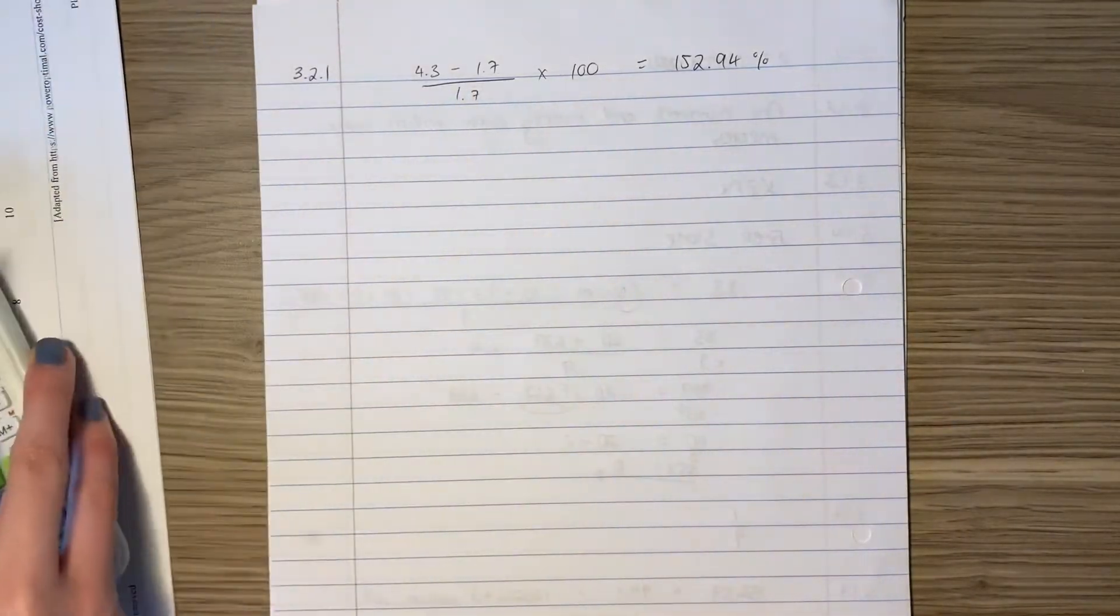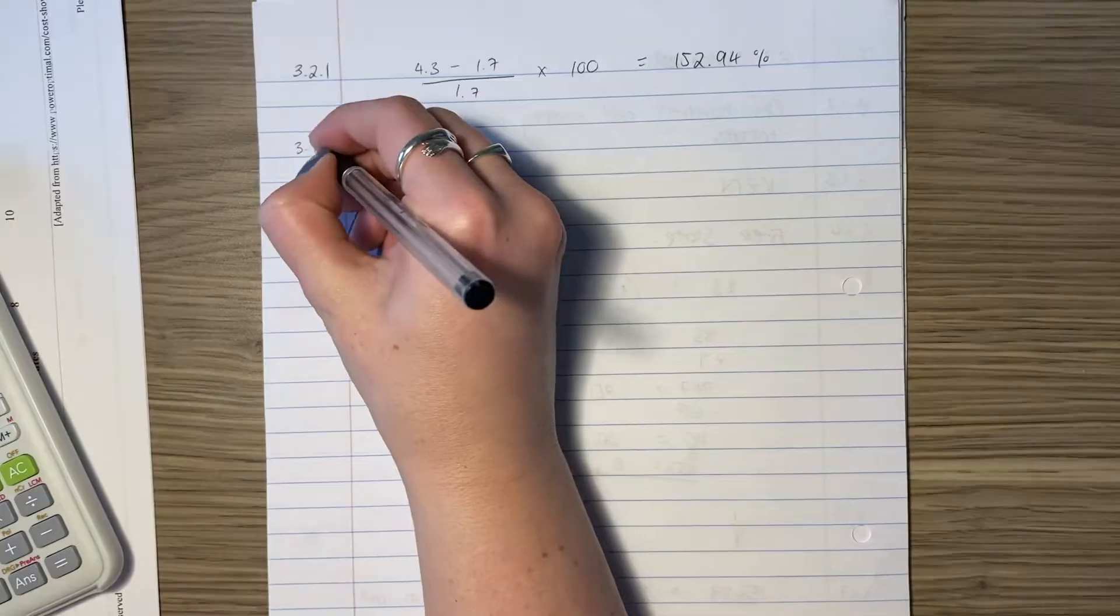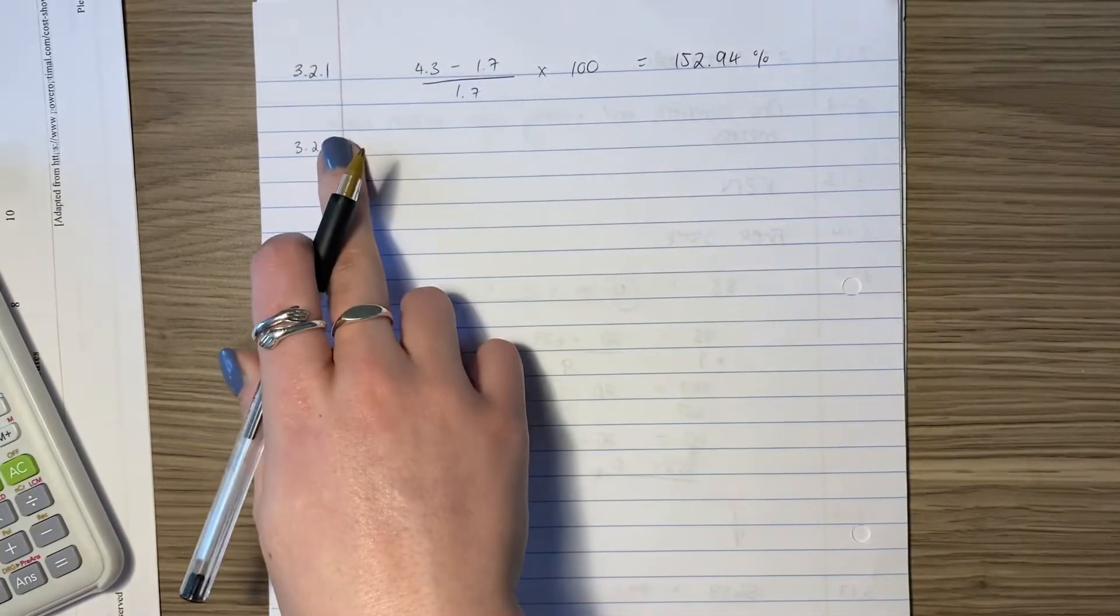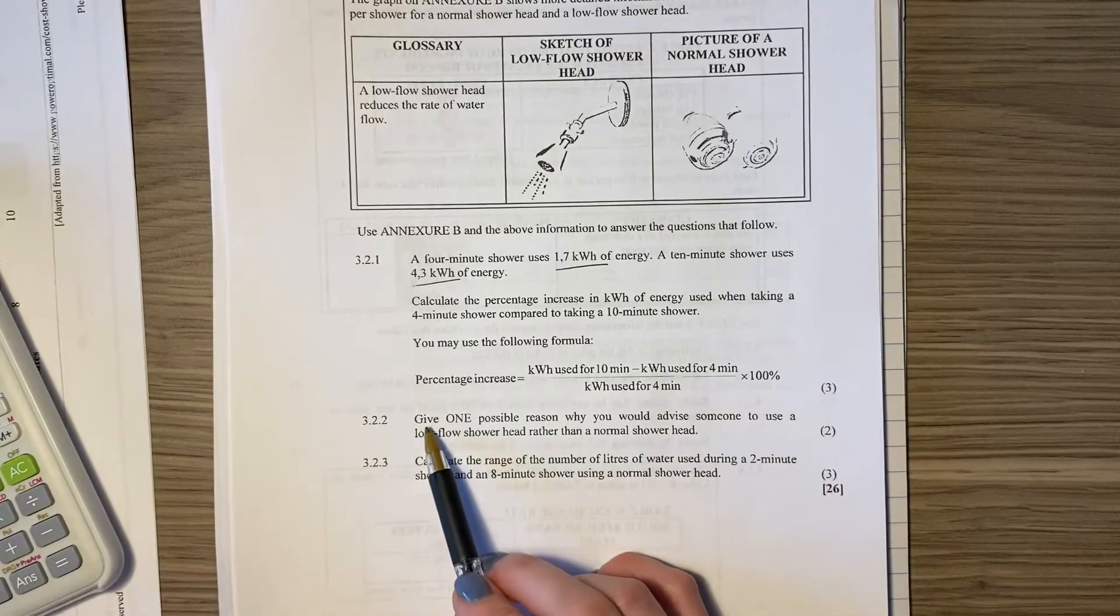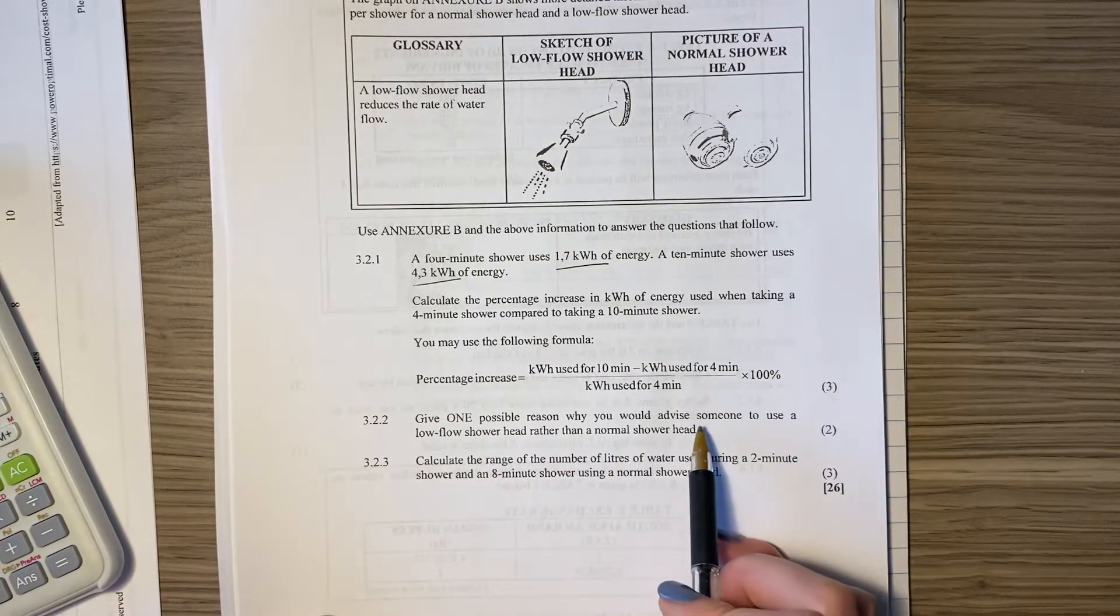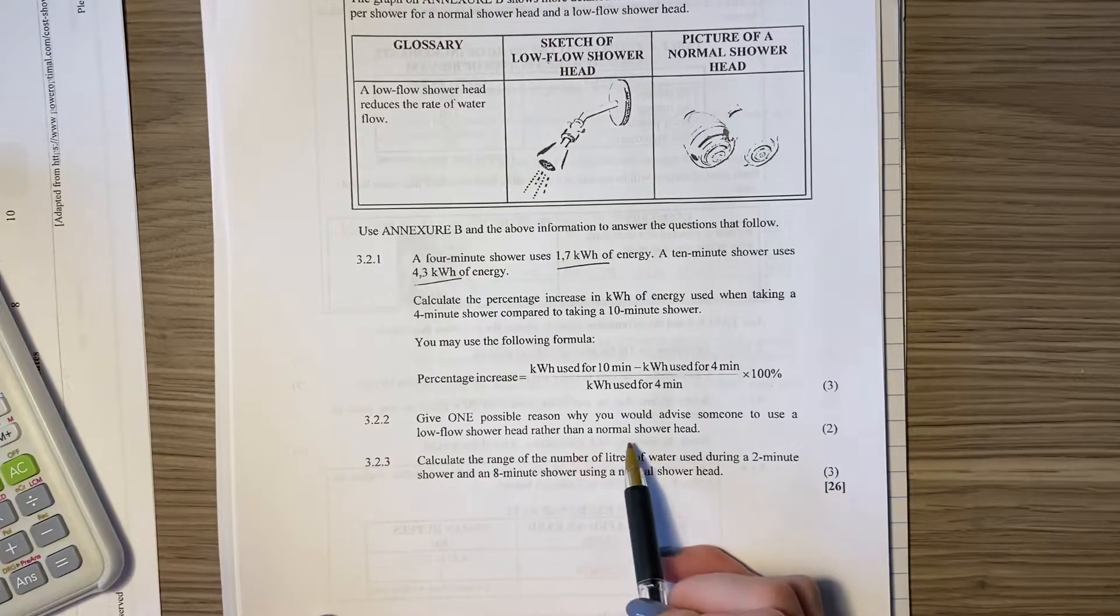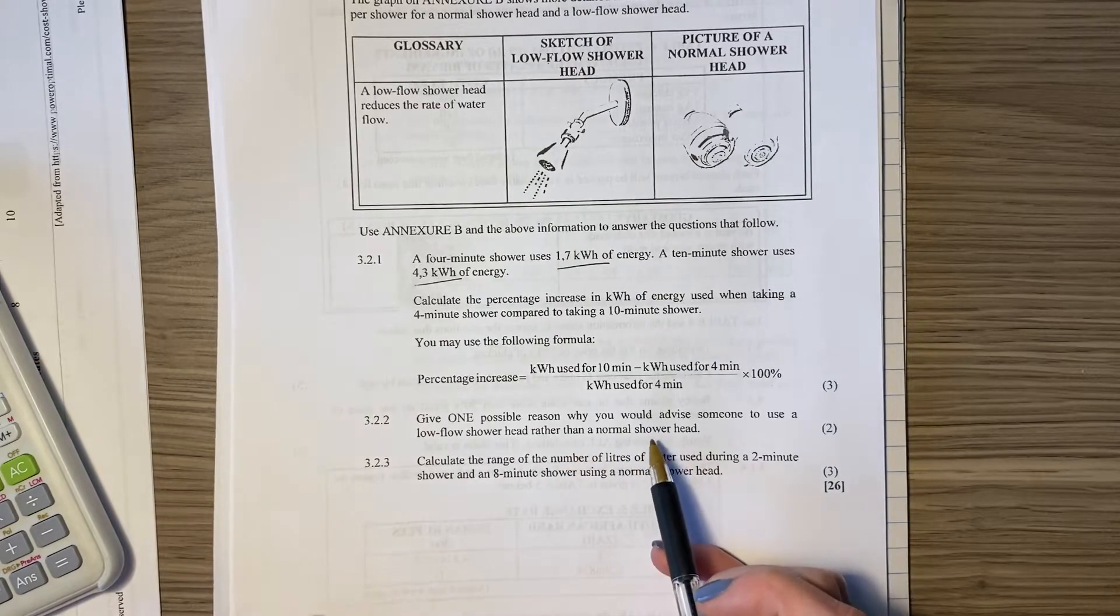Let's continue to the next question. Remember, always write down your question number well, so that your marker knows exactly what you're doing. Give one possible reason why you would advise someone to use a low flow shower head, rather than a normal shower head.